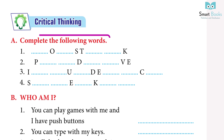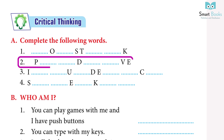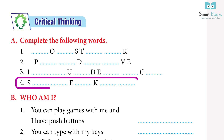Critical thinking — A: complete the following words. 1. Joystick. 2. Pen drive. 3. Input device. 4. Speaker.